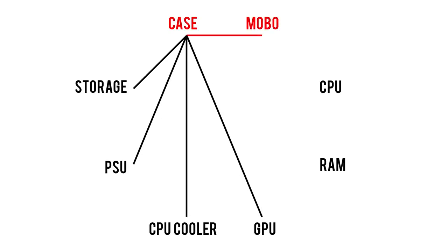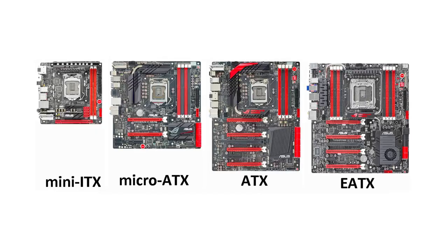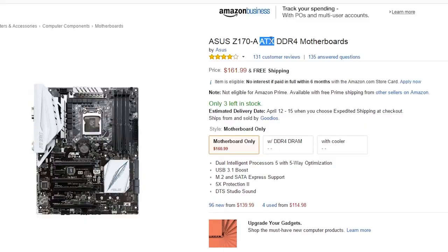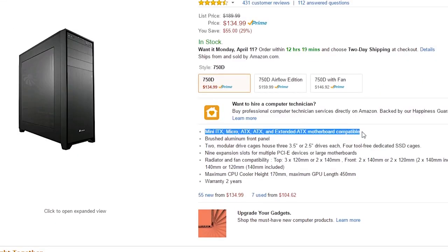So for starters, the relationship between cases and motherboards is pretty simple. Motherboards come in a number of sizes or form factors, but the most common ones from smallest to largest are mini-ITX, micro-ATX, ATX, and extended ATX or E-ATX for short. Once you know what kind of board you're dealing with, you can look on a case's product page to see what types of boards it supports.